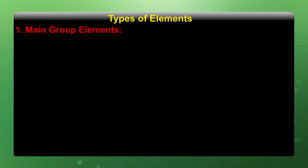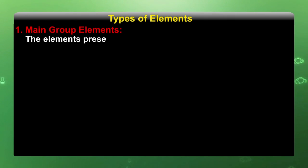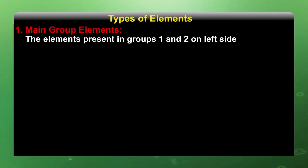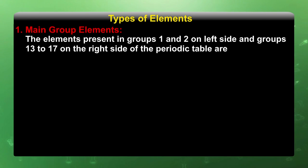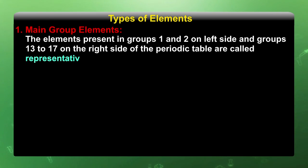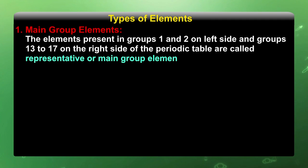Main group elements: the elements present in group 1 and 2 on the left side and group 13 to 17 on the right side of the periodic table are called representative elements or main group elements.